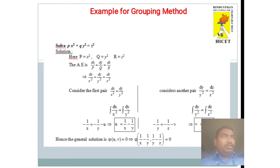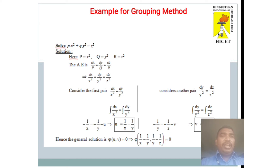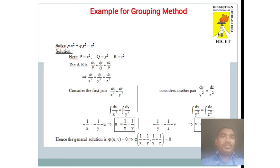Since the function involves only single-term functions, separation of variables is possible, so we use the method of grouping. Taking the first two equations: dx/x² = dy/y², integrating both sides gives the solution u = 1/x − 1/y. Similarly, taking the pair dy/y² = dz/z² and integrating gives v = 1/y − 1/z. Hence, the general solution of the given linear partial differential equation is φ(u, v) = 0, which gives φ(1/x − 1/y, 1/y − 1/z) = 0.